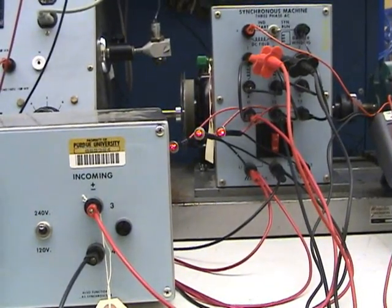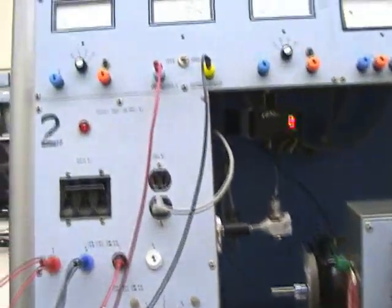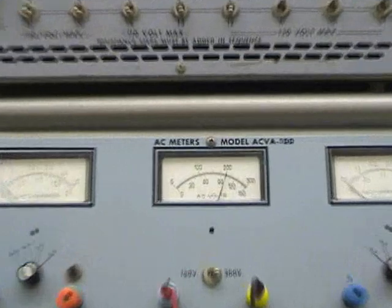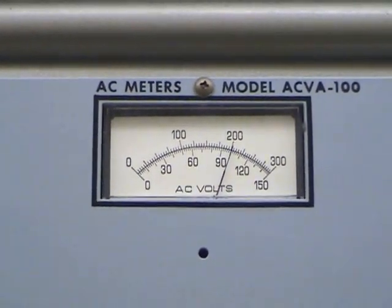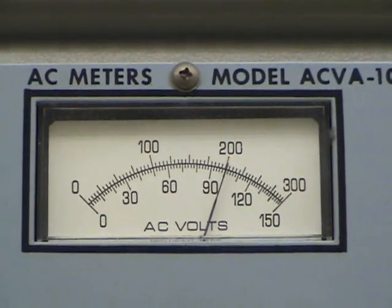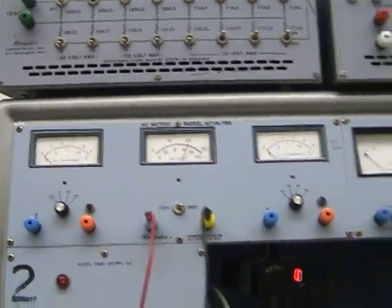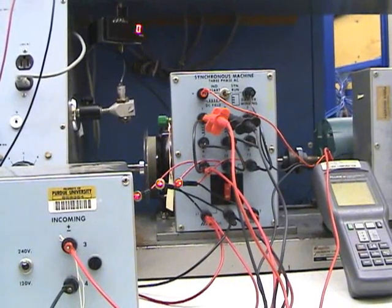The first thing we want to do is measure the line voltage for the power supply. And so looking at our meter up here, make sure you're set on the high scale here, and we can see that we're right at 200 volts line voltage here. That'll be important because we want to make sure that the generator is putting out 200 volts as well, so that when we close the switch, there's not much voltage across the switch.